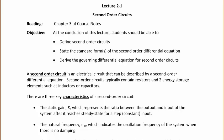There are three key characteristics of a second-order circuit. The first one, just like first-order, is the static gain, which represents the ratio between the output and the input of the system after it reaches steady state for a step or constant input.